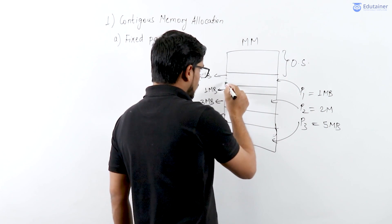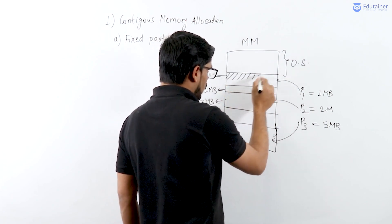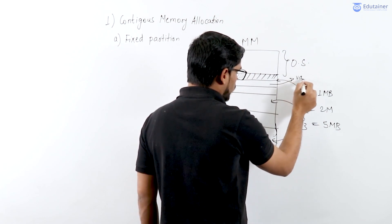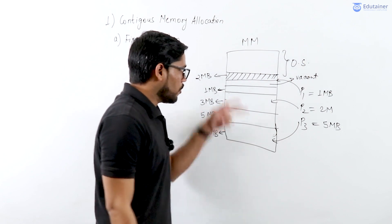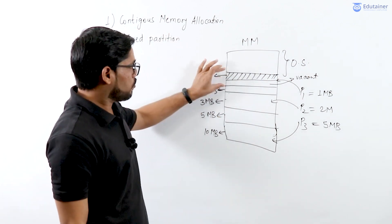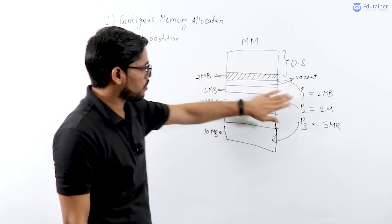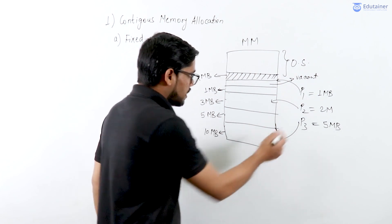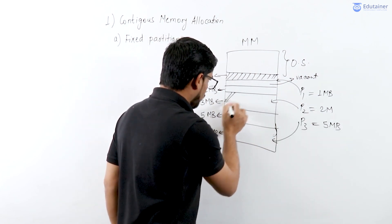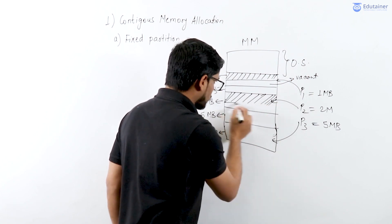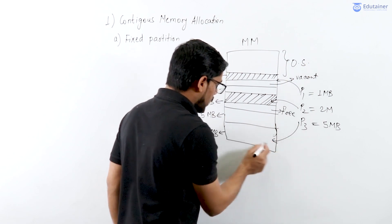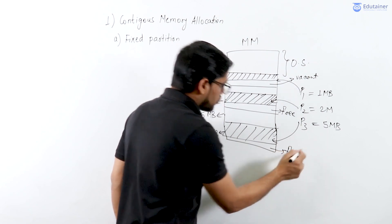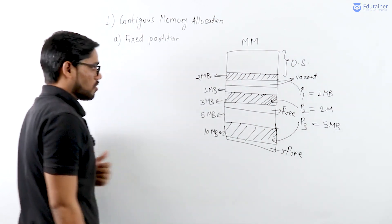Because of fixed partitioning, some space remains vacant. For instance, P1 occupies 1MB in a 2MB partition, leaving 1MB free. P2 occupies 2MB in a 3MB partition, leaving 1MB free. P3 occupies 5MB in a 10MB partition, leaving 5MB free — but no other process can use this vacant space.